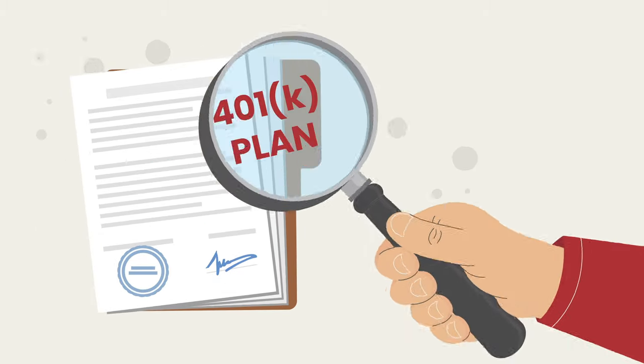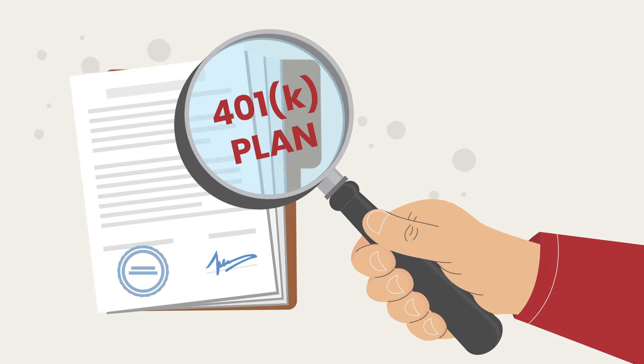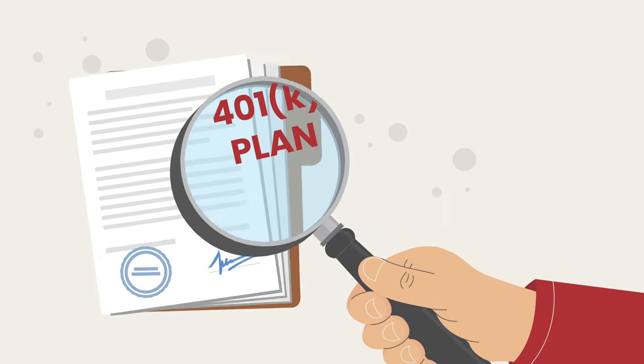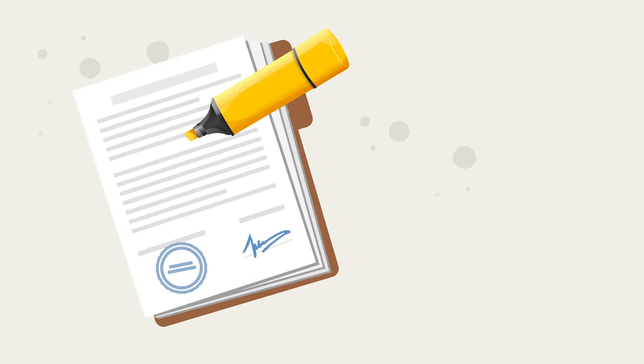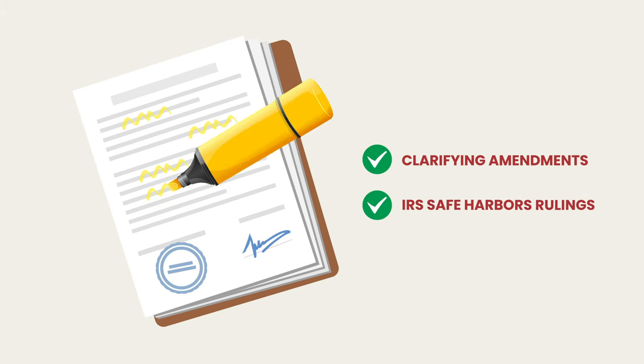Just as the 401K tax code initially drew the attention of the IRS, so too does the 831B tax code. Through years of tax court cases, clarifying amendments to the tax code, and IRS safe harbor rulings, the guidelines for operating a 401K plan are clear.